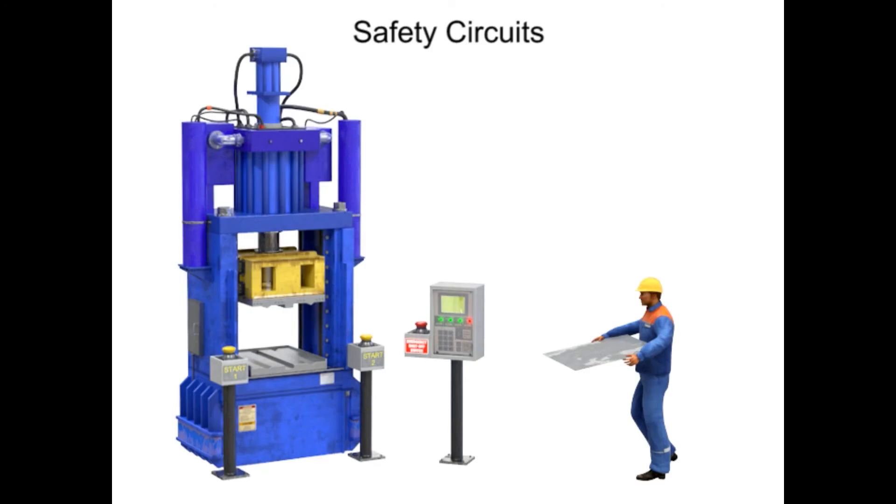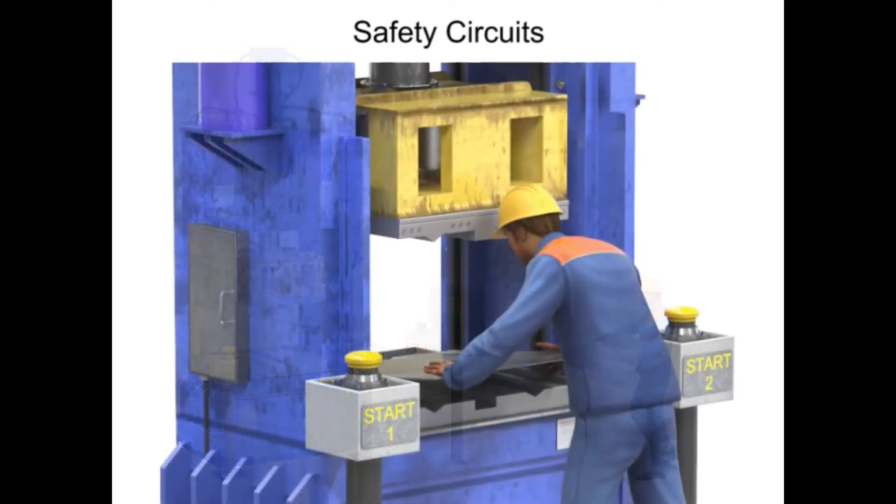When operating industrial machinery, safety is always a primary concern. Two-hand controls and anti-tie-down circuits are safety devices built into the design of electrical circuits that operate industrial machines.